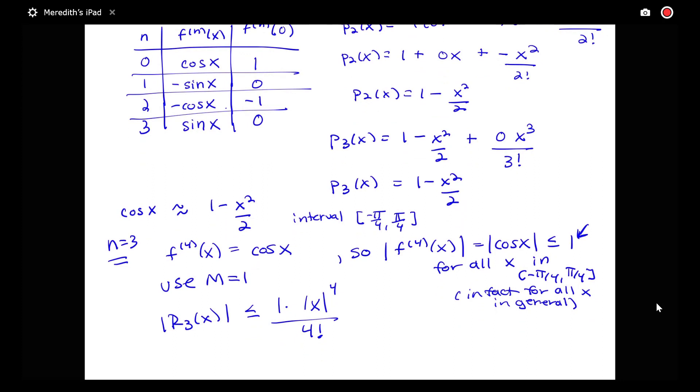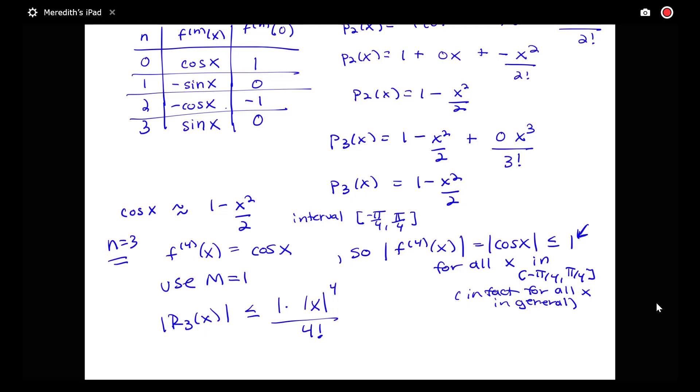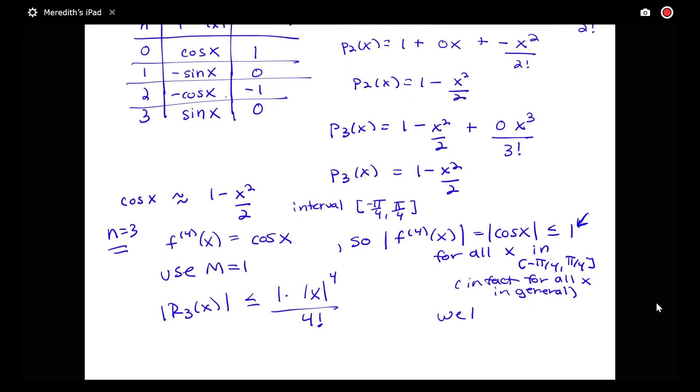So how can I go one step further here when I have this particular interval to get a number that will bound that absolute error? Well, I know that x here is between negative pi fourths and pi fourths.